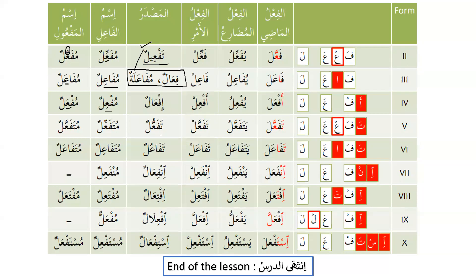Form 5: tafa'ala yatafa'alu, masdar tafa'ulan, mutafa'il and mutafa'al. Forms 5 through 7 do not have kasra in ism al-fa'il in the same way — only mutafa'il takes kasra. Form 6: tafa'ala yatafa'alu tafa'ulan, mutafa'il and mutafa'al. The passive of Form 3 fa'ala would be fu'ila — for example jahada becomes juhida. For Form 5 tafa'ala, the passive is tufu'ila, because dhamma is incompatible with alif, which changes to waw.